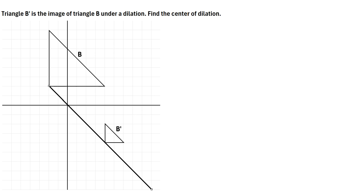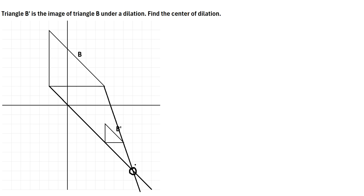Then we have to pick one more corner — it doesn't matter which one — so let's say this bottom right corner. We'll draw a line to the bottom right corner of B' and keep extending it. What we're gonna do is just see where these lines intersect. It looks like they intersect at this point right here.